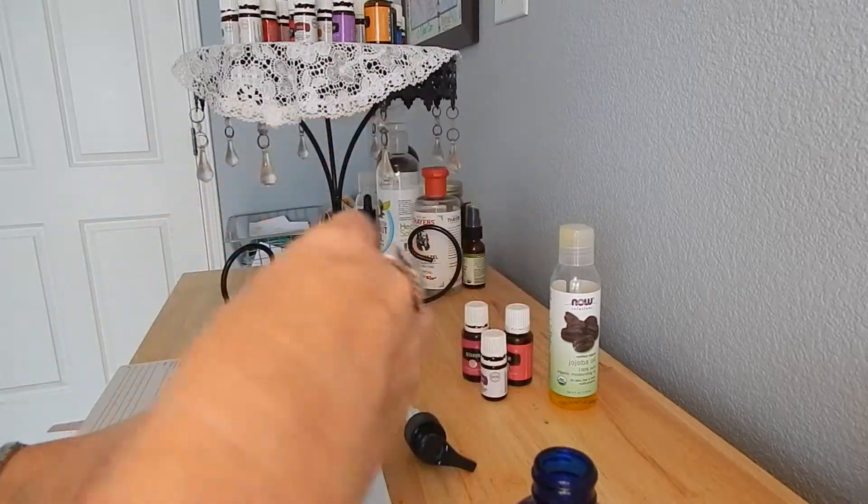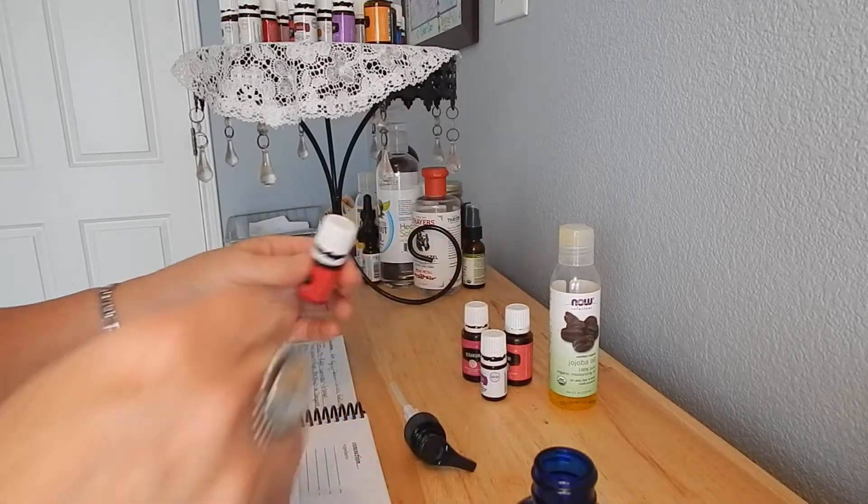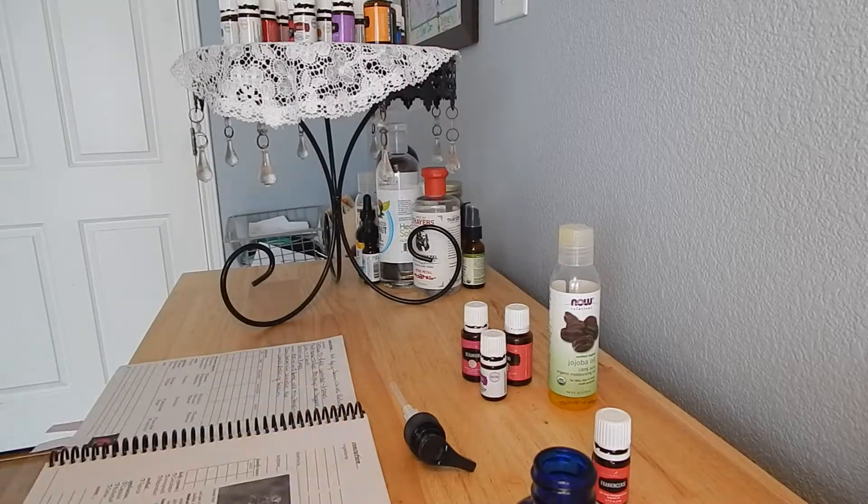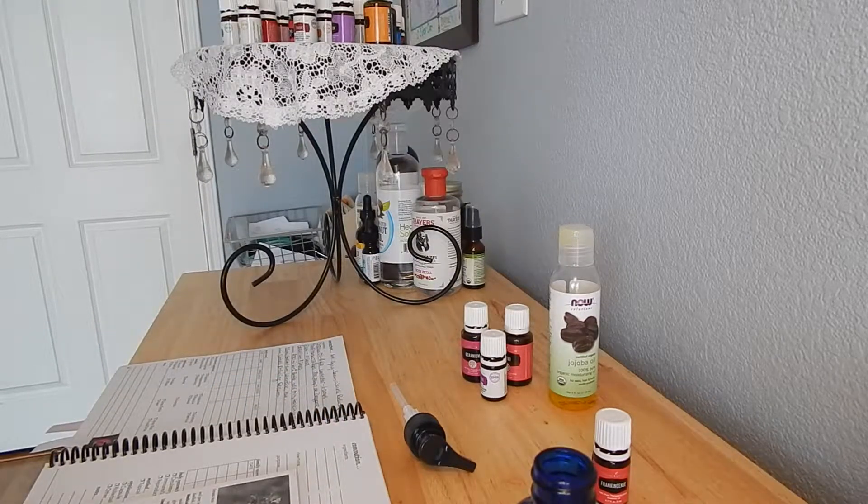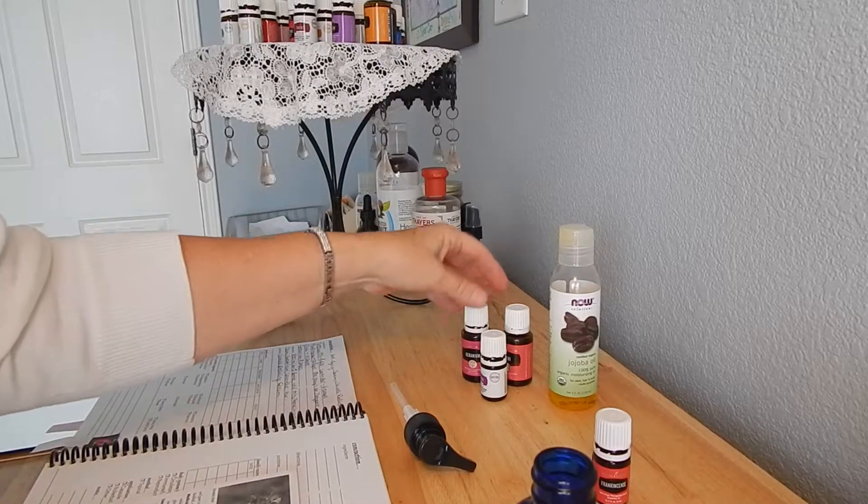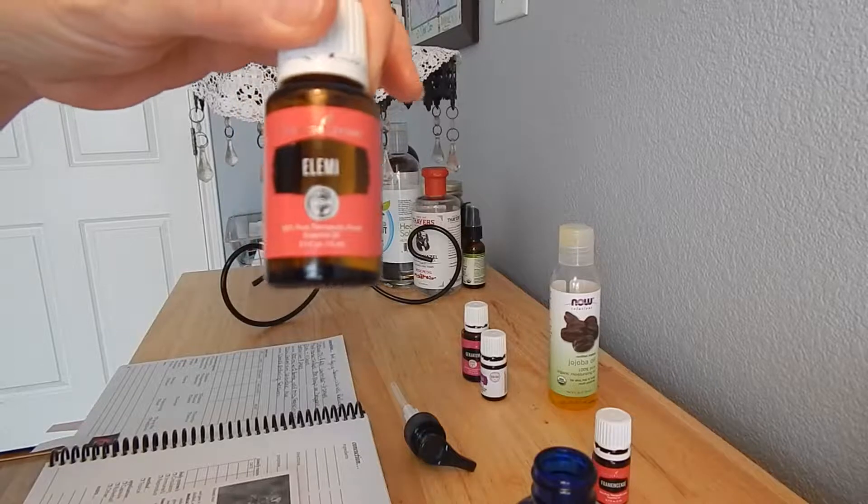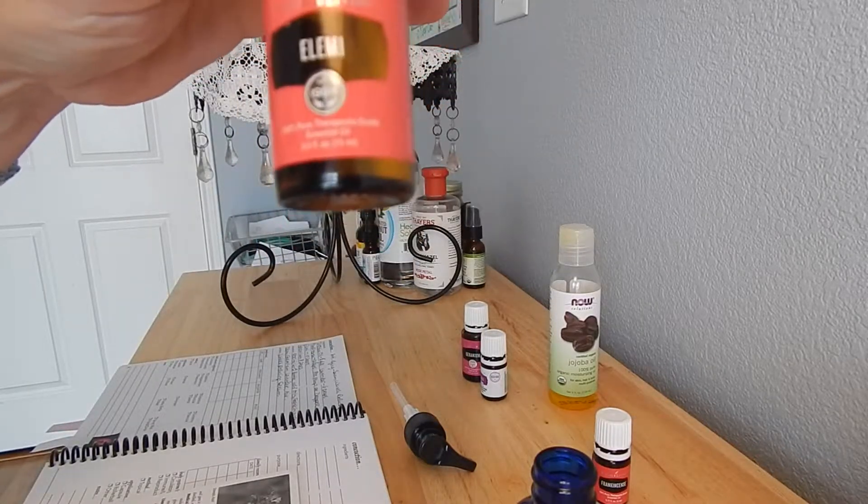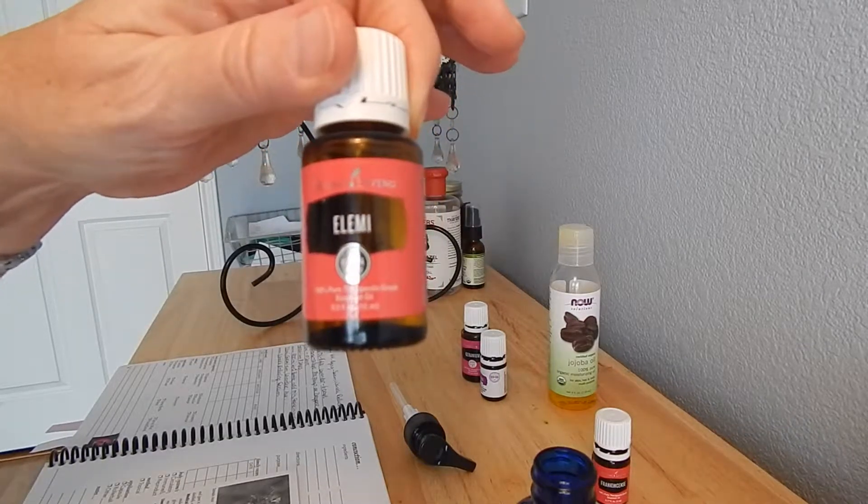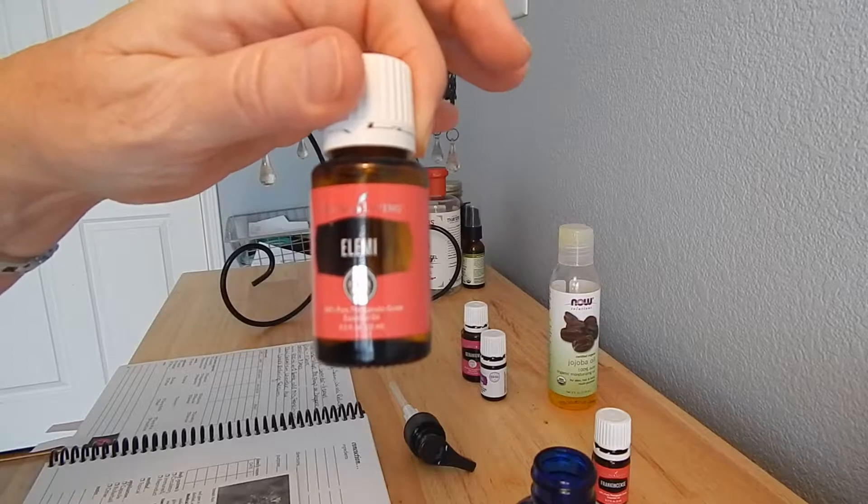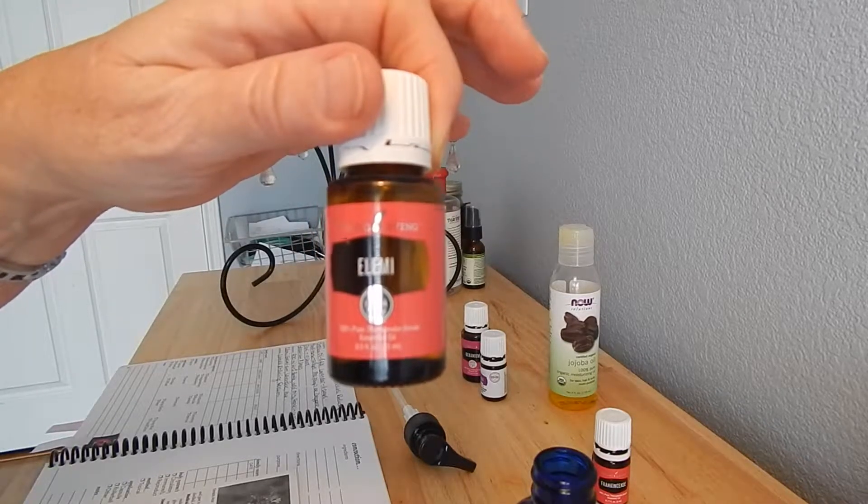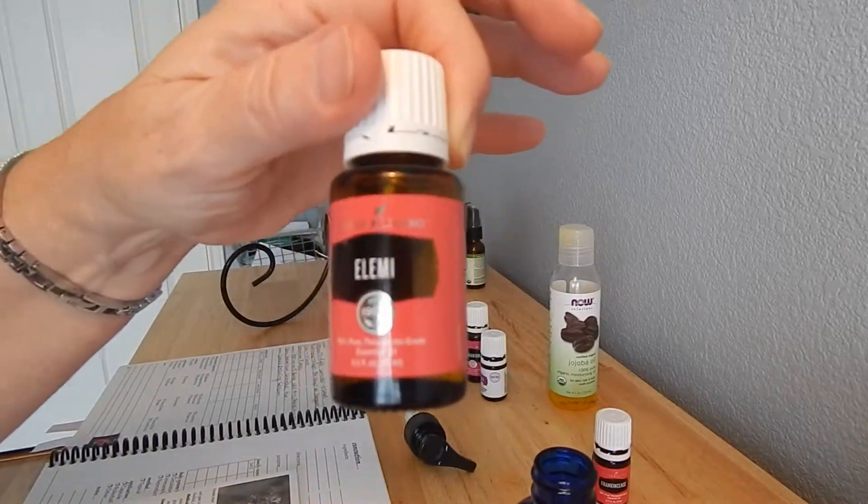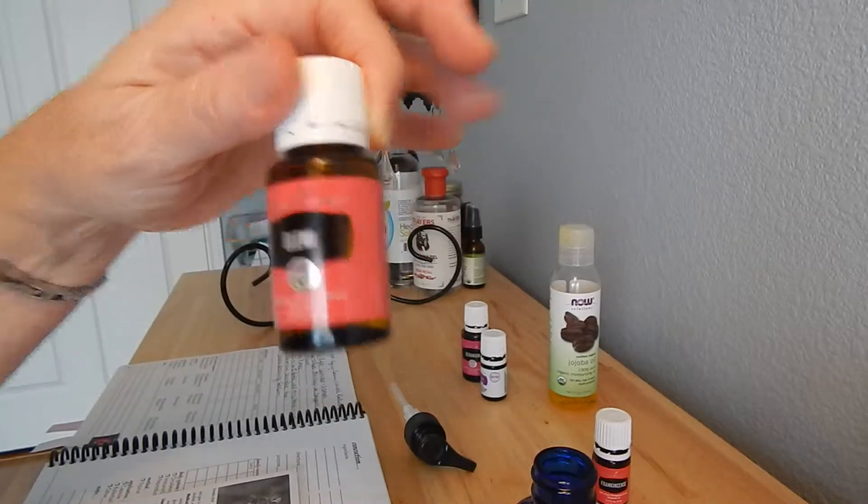Okay, so the next oil that we're going to use is, and I hope I say this right, I have the oil, I've been using the oil but I'm just not sure if I'm pronouncing it right, it's elemi, E-L-E-M-I, elemi. Elemi has been used in Europe for hundreds of years in salves for the skin. It's included in celebrated healing ointments and balms.